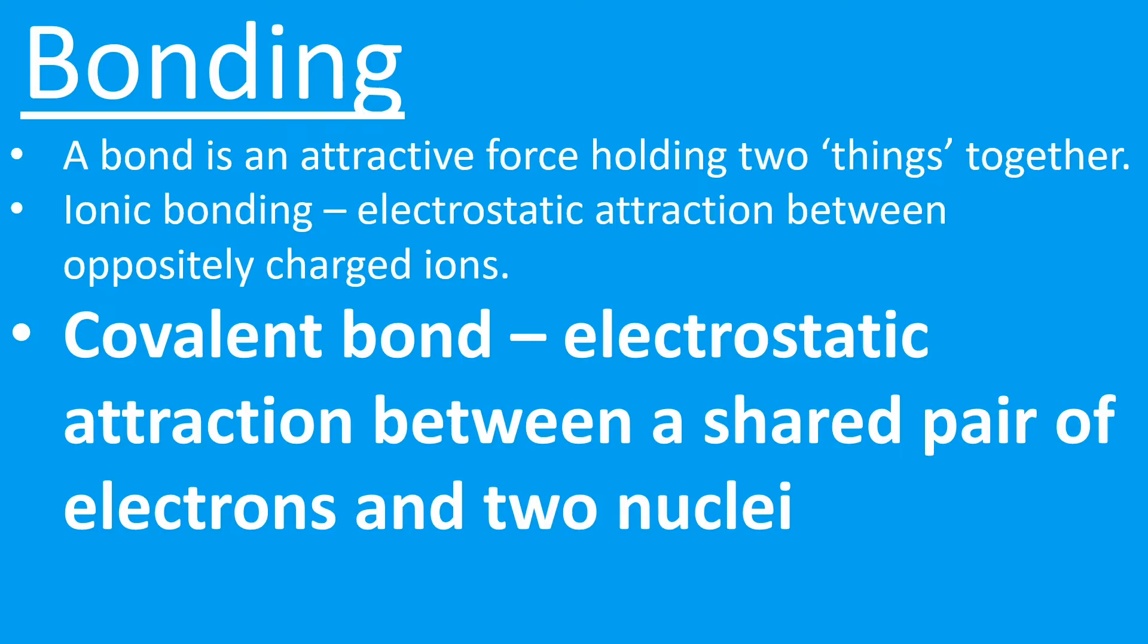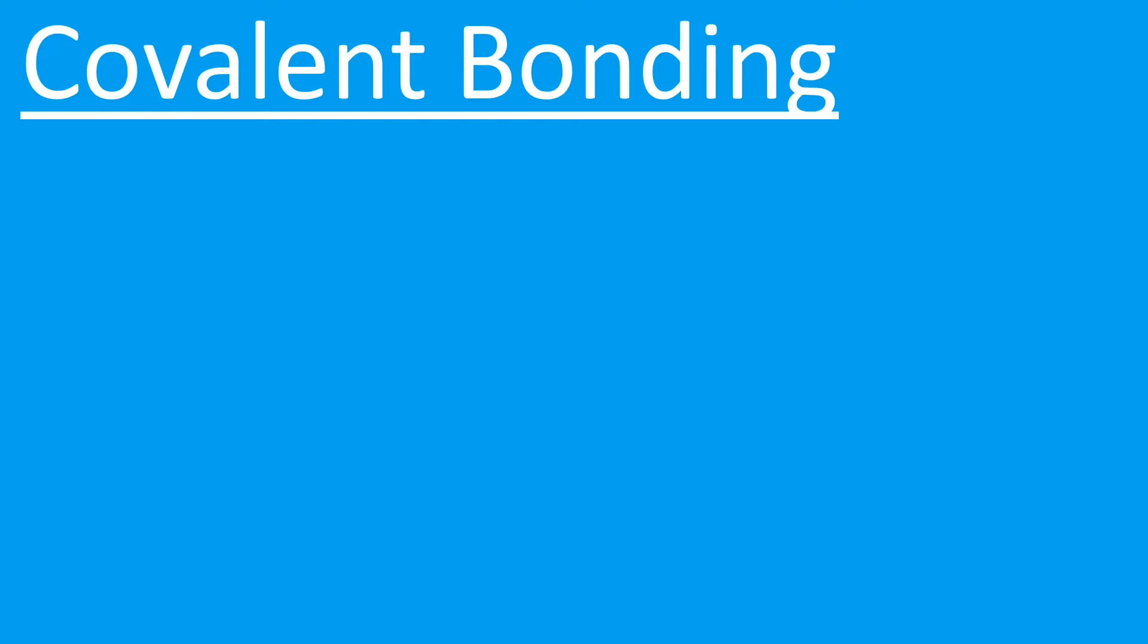Some more detail on covalent bonding then. We will not see any metals involved in covalent bonding. Metals are either involved in metallic bonding as elements, or if they're with a non-metal, it's ionic bonding, and you'll see those covered in other videos.